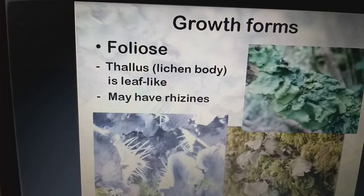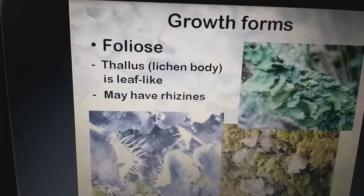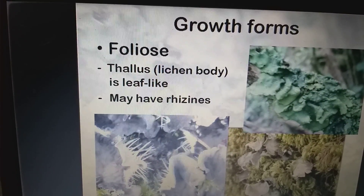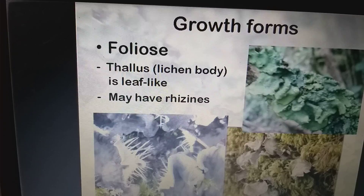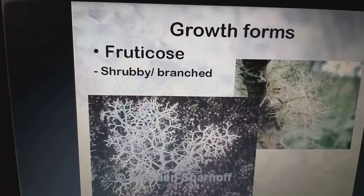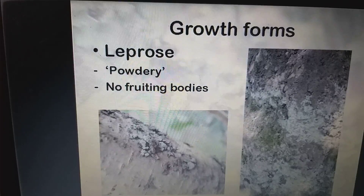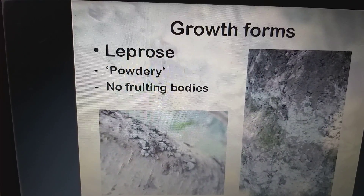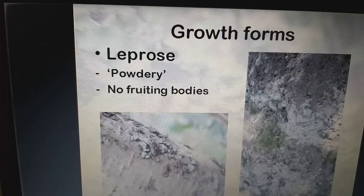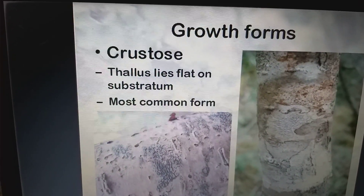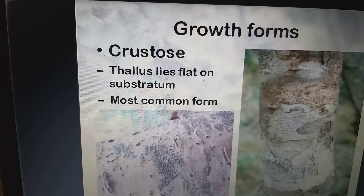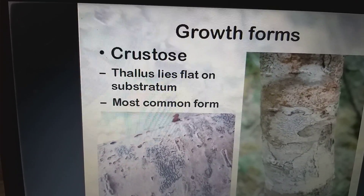Coming to the growth forms: foliose — the thallus or lichen body is leaf-like and may have rhizines, which are small root-like structures. Fruticose — shrubby and branched. Leprose — powdery, with no fruiting bodies and no leaf-like thallus. Crustose — the thallus lies flat on the substratum; this is the most common form.